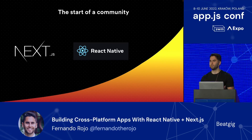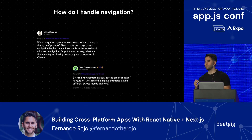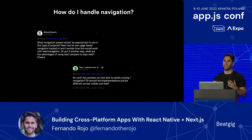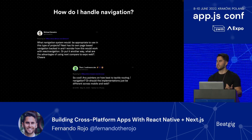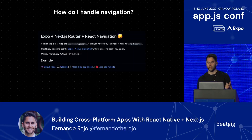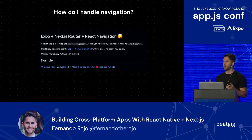But there was a pretty big elephant in the room: how do I handle navigation? My DMs were flooded with this question. All over GitHub, everyone's asking how to do this. Navigation is by far the hardest part of cross-platform development. So in my next talk, I discussed a library I made called Expo-Next React Navigation. As the name implies, this library lets you share code between Expo and Next.js with React Navigation on the native side.